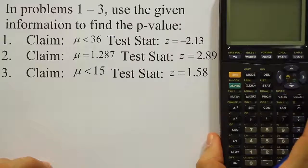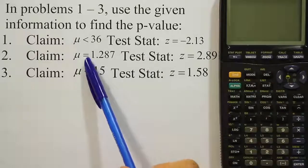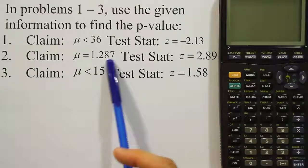That means it's a left tailed test. And then we have the next one is an equal to for the claim. Now that means that the claim is actually H0 and its opposite is not equal to. So this is a two-tailed case.